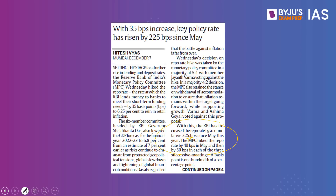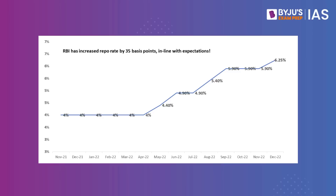Looking at how the RBI has been increasing the repo rate: starting from May it was 4.40 percent, increased to 4.90 percent, then to 5.40 percent, then to 5.90 percent, and now it is at 6.25 percent. The MPC decision to hike rates comes in the backdrop of high inflation, and to reduce inflation the RBI has increased the repo rate.